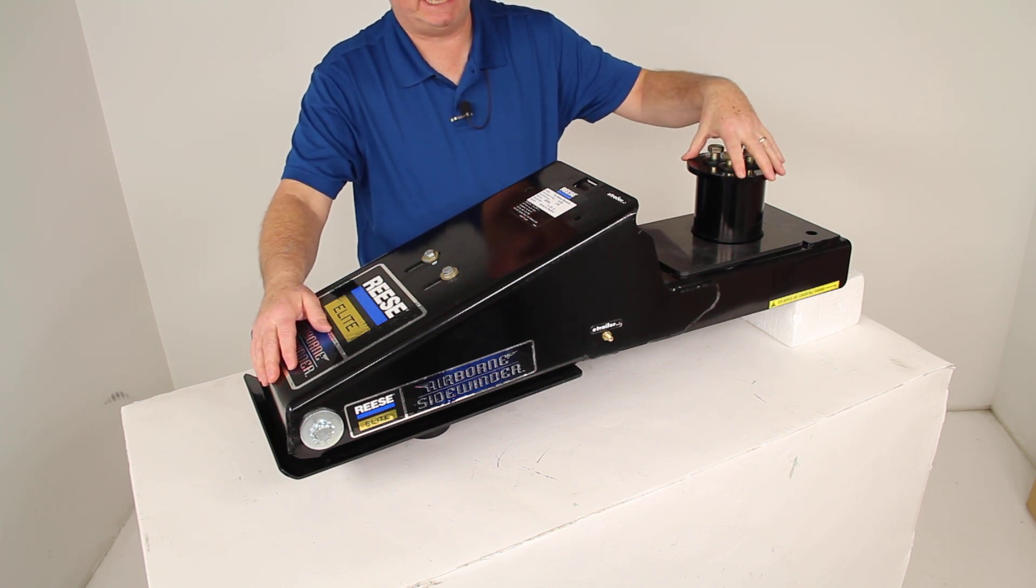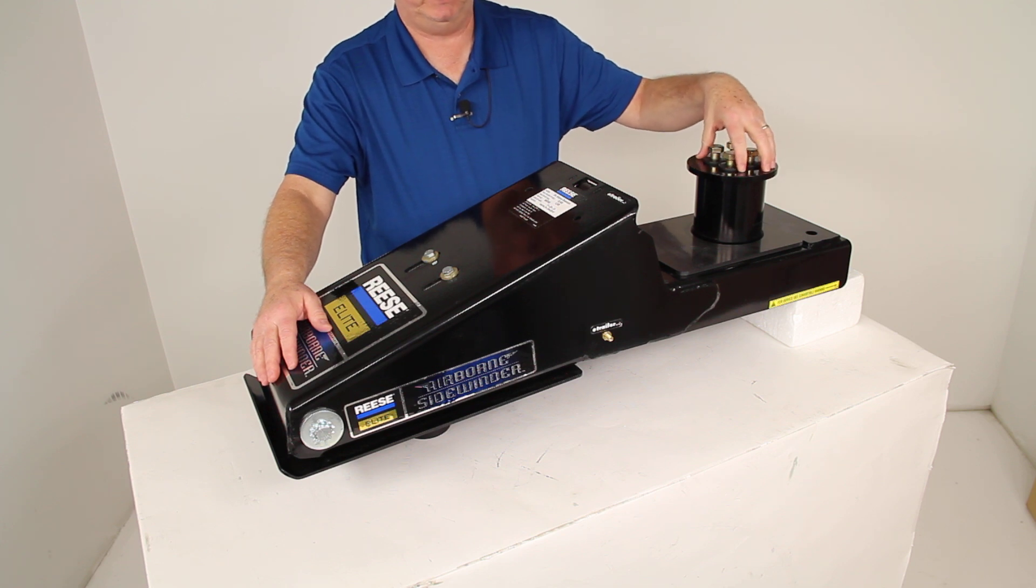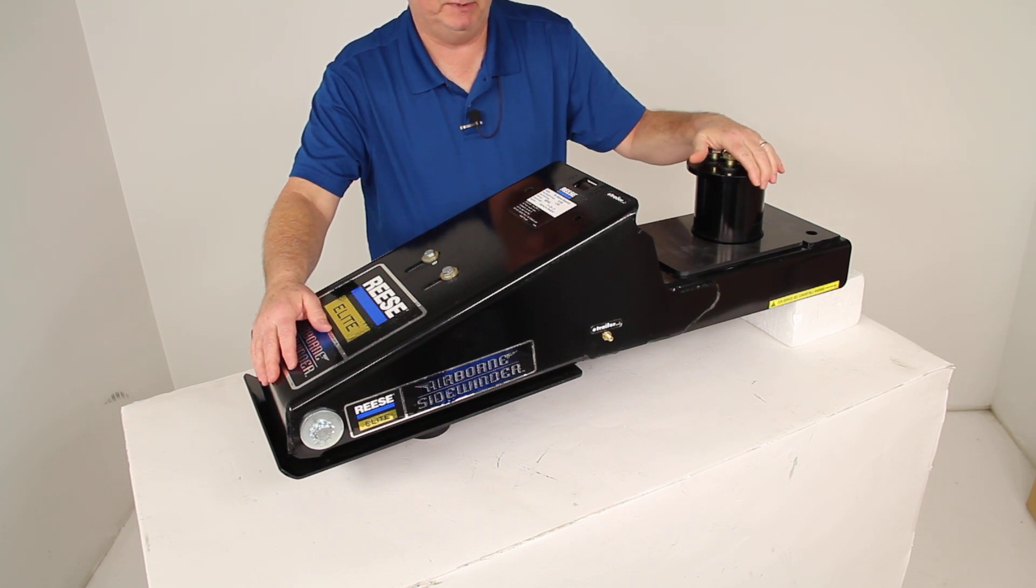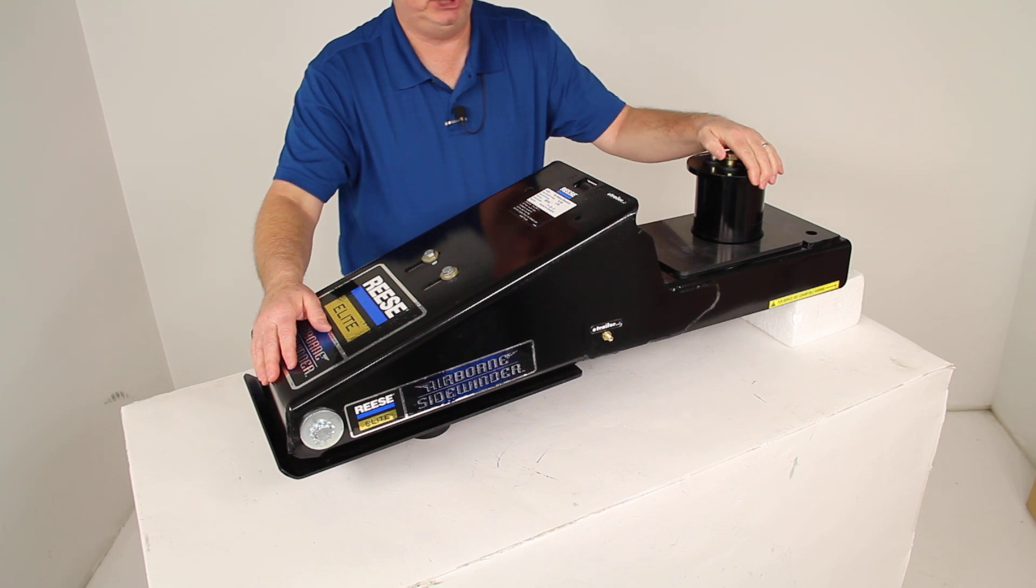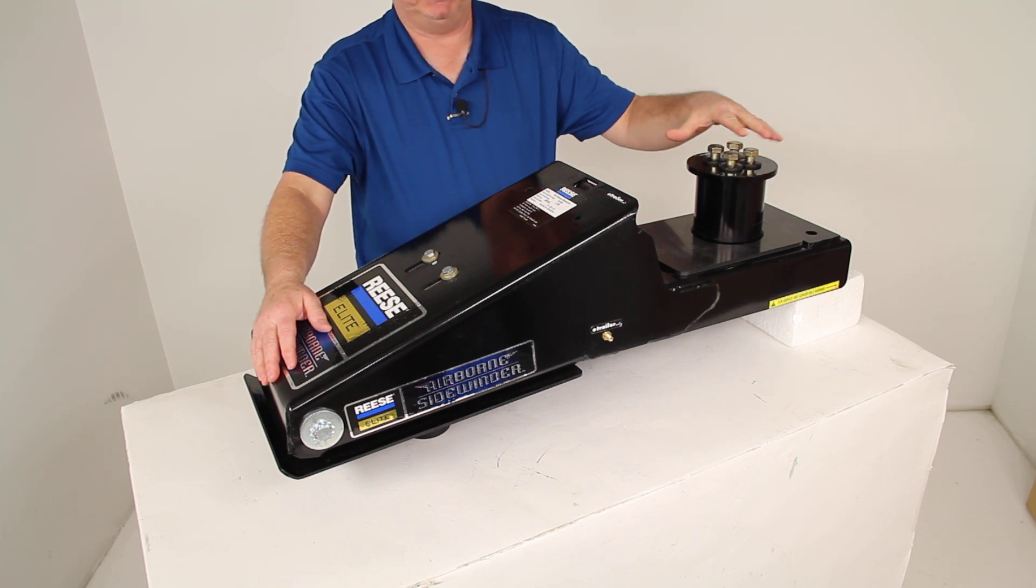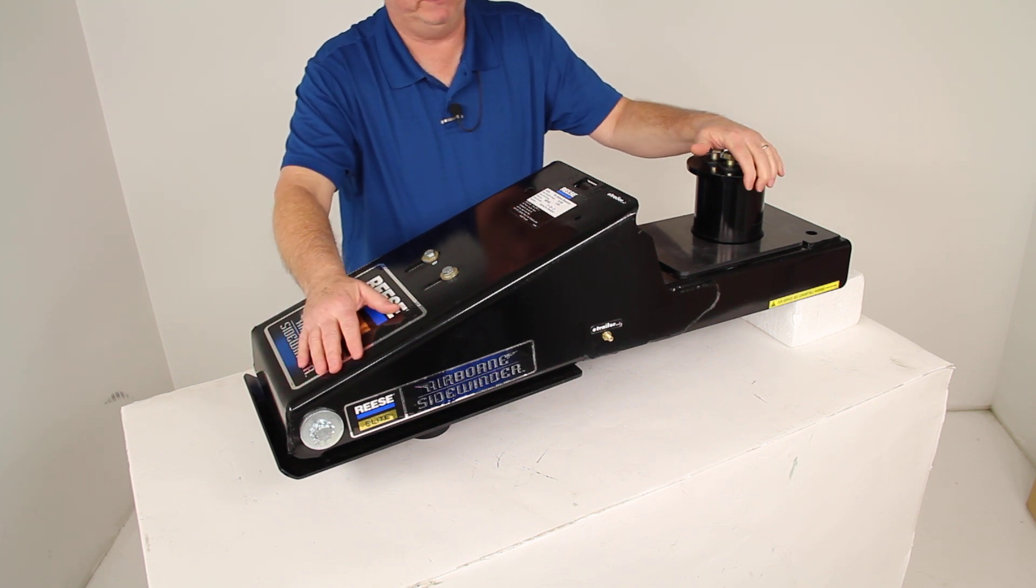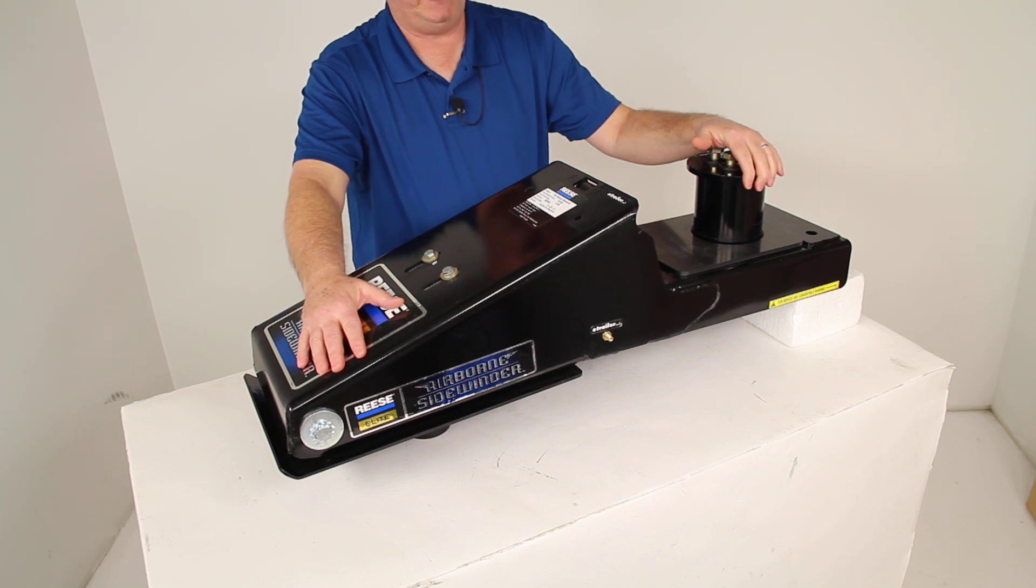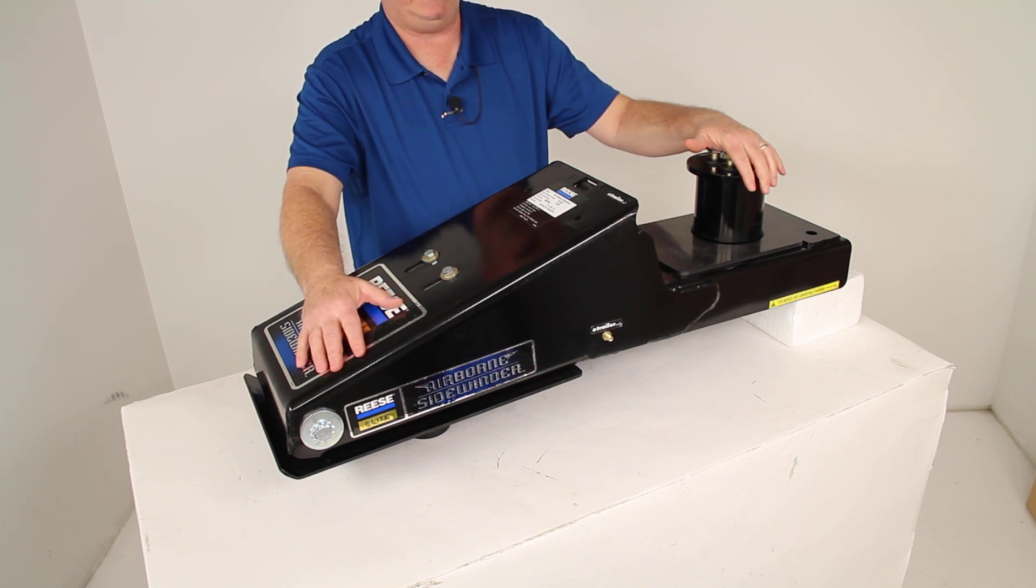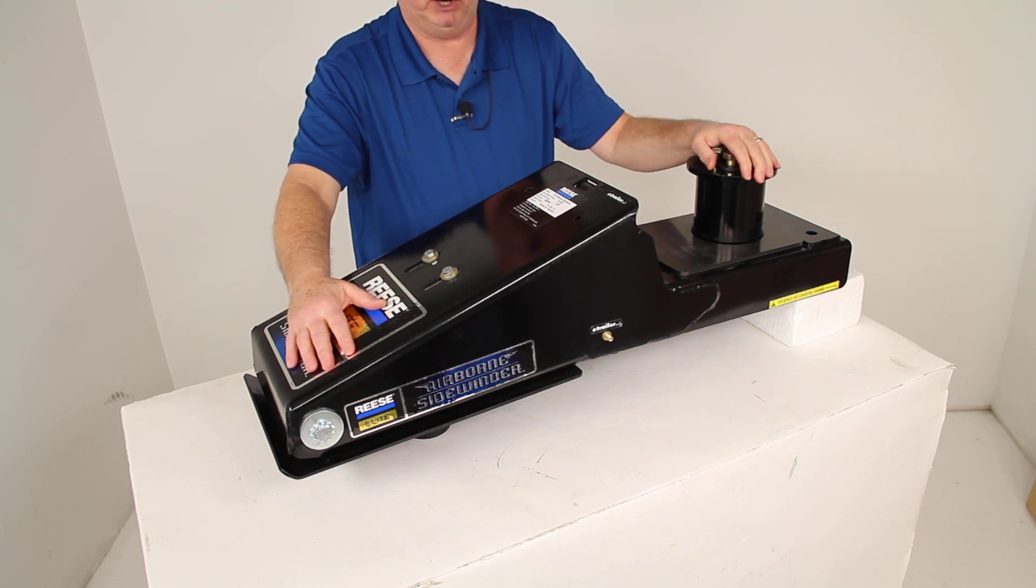The reason this does not have a turret is because you are required to mount a rotating turret on here to work correctly. We do sell those separately, but there's about five different ones that you would need to choose from, and you'll have to pick the correct one for your application because the turret itself is made to fit a particular pinbox manufacturer that is on your fifth wheel. Once you get what pinbox manufacturer you have and then choose the correct turret, you can just add that turret to this and you'd be ready to go.